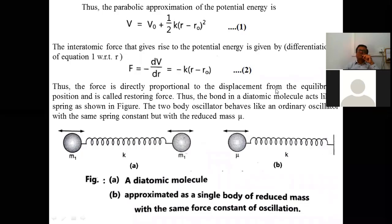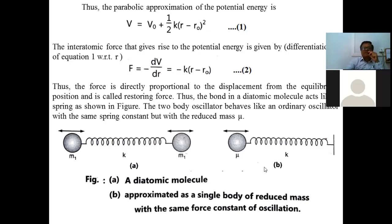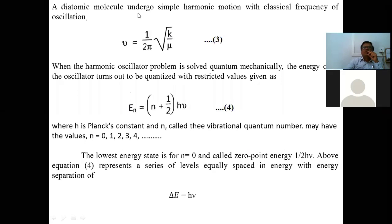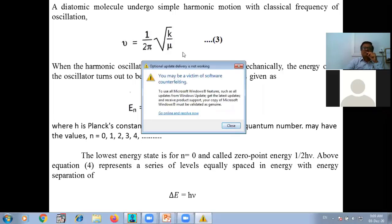The force is directly proportional to displacement from the equilibrium position and is called restoring force. Thus the bond in a diatomic molecule acts like a spring, as shown in figures (a) and (b). The two-body oscillator behaves like an ordinary oscillator. The classical frequency of simple harmonic motion is ν = (1/2π)√(k/μ), where μ is the reduced mass. This is Equation 3, giving the frequency of the oscillator.